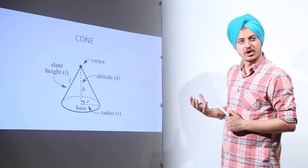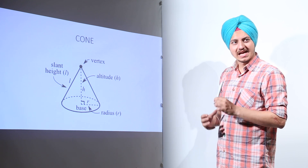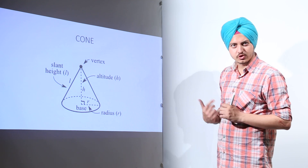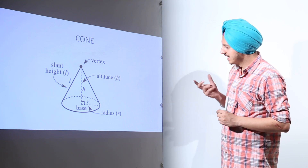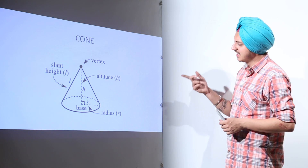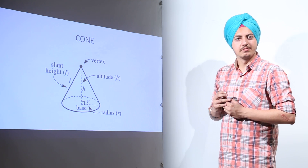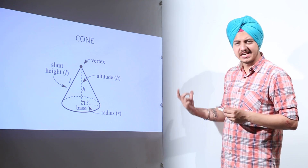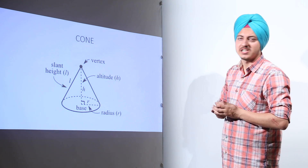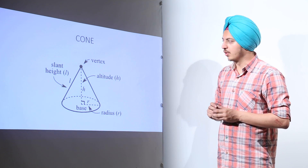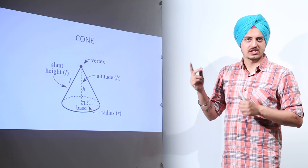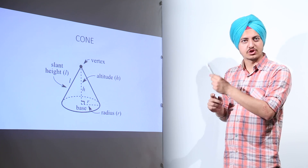The base of the cone is the circular region at the bottom of the cone. That base has a radius. The cone has a height, which is the altitude, mentioned by H. The radius is mentioned by R. Then there is a slant height of the cone, mentioned by L, and there is a vertex on the top of the cone.